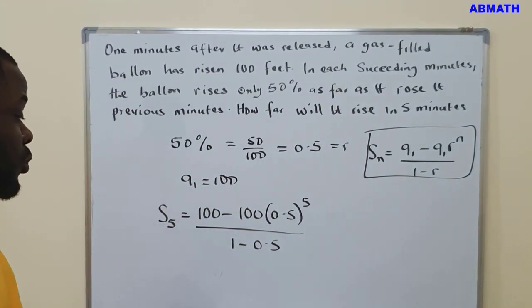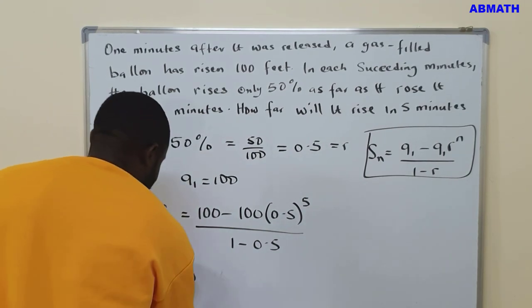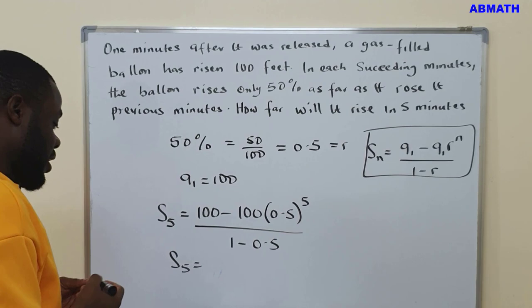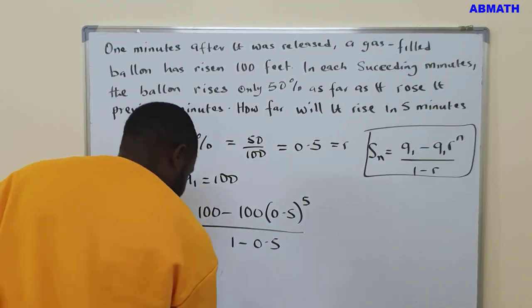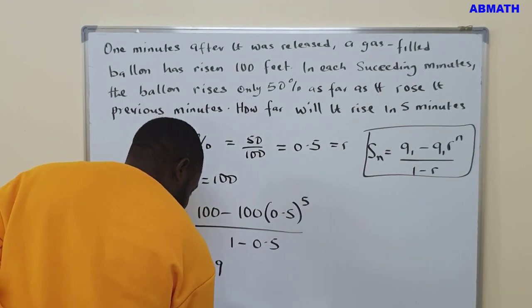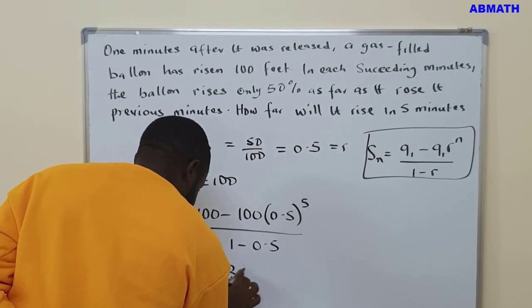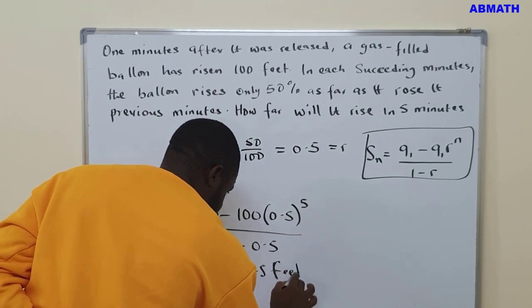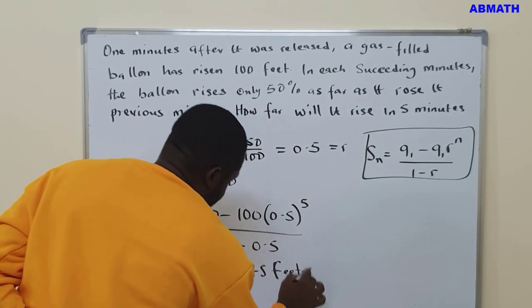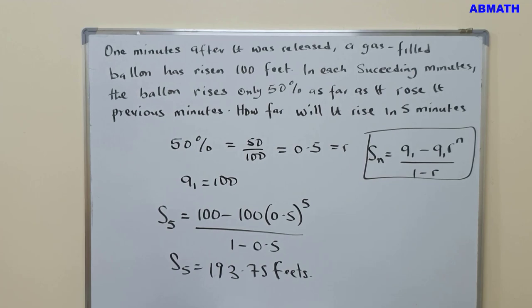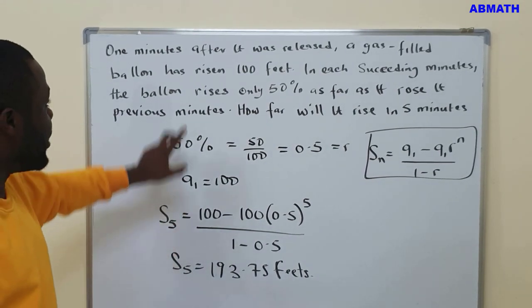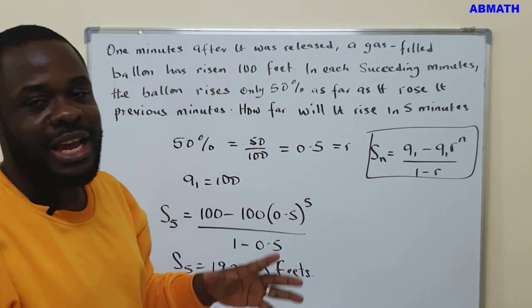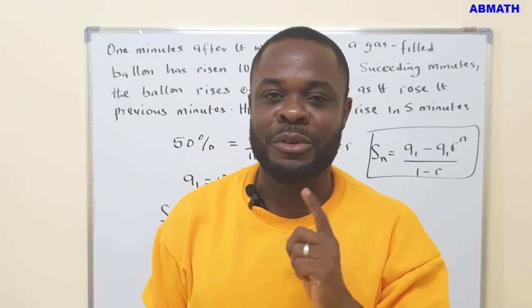And that is how you solve the question. Let me use my calculator. I think it's going to be 193.75 feet after five minutes. So the balloon will rise up 193.75 feet after five minutes.